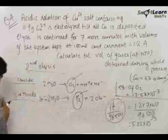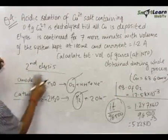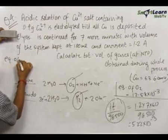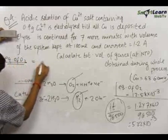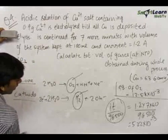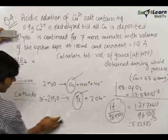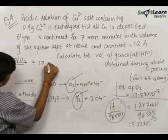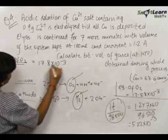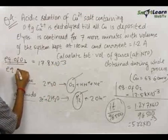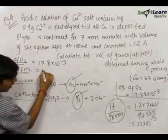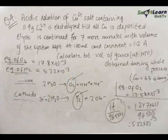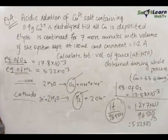O₂ was also produced in the first electrolysis. Therefore, total equivalents of O₂ produced equals 12.58 + 5.22 × 10⁻³, which is 17.8 × 10⁻³. Equivalents of hydrogen produced equals 5.22 × 10⁻³. Now we have the equivalents of the respective gases being produced.